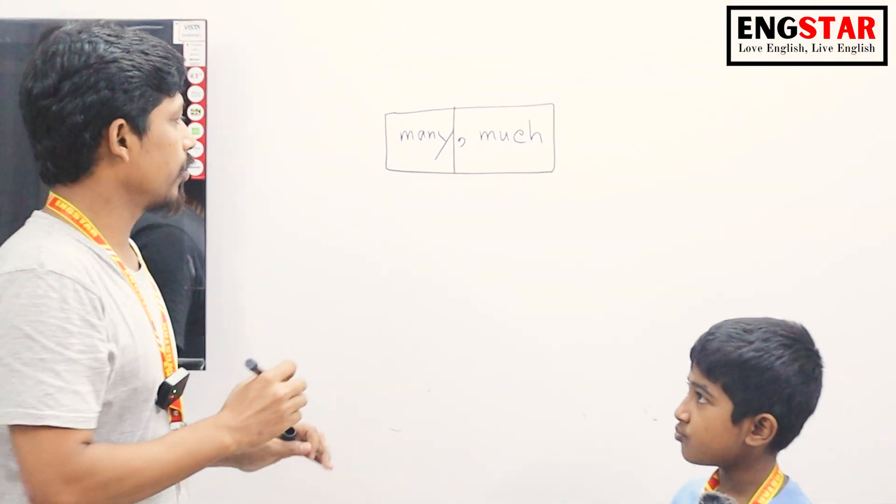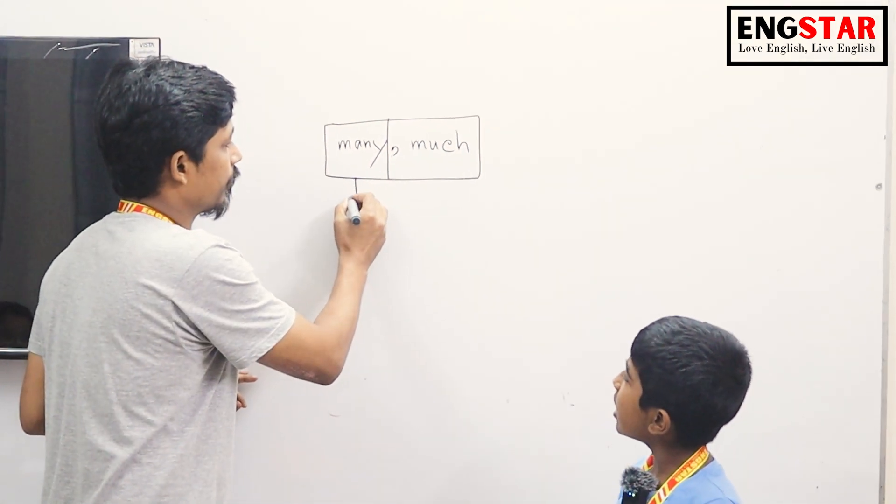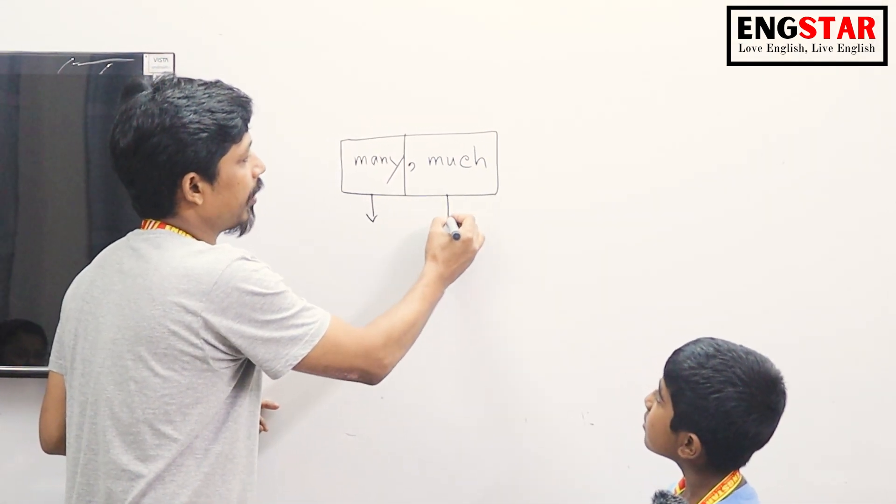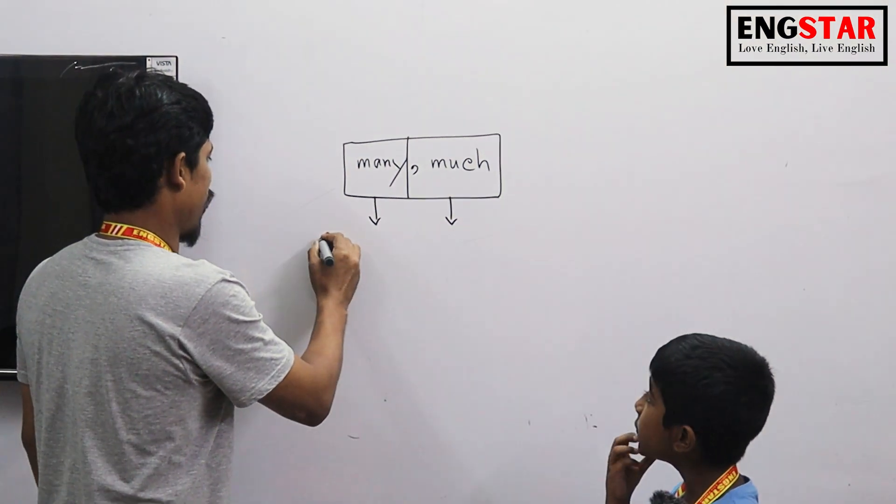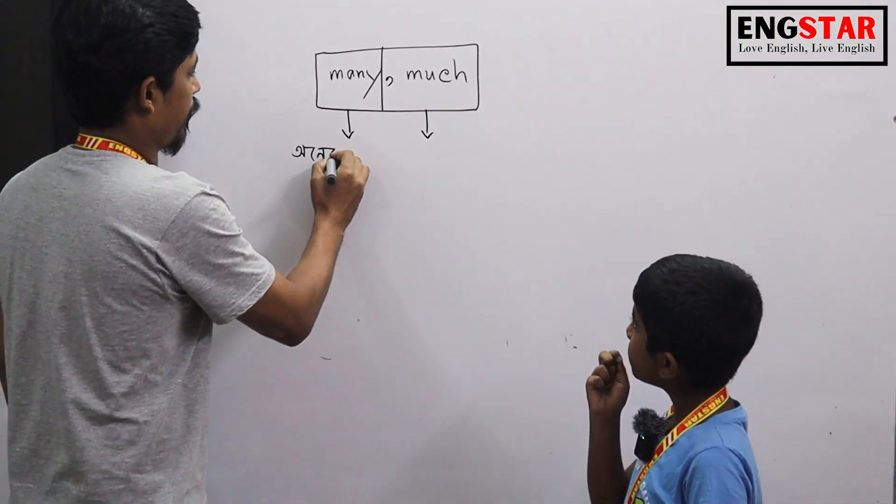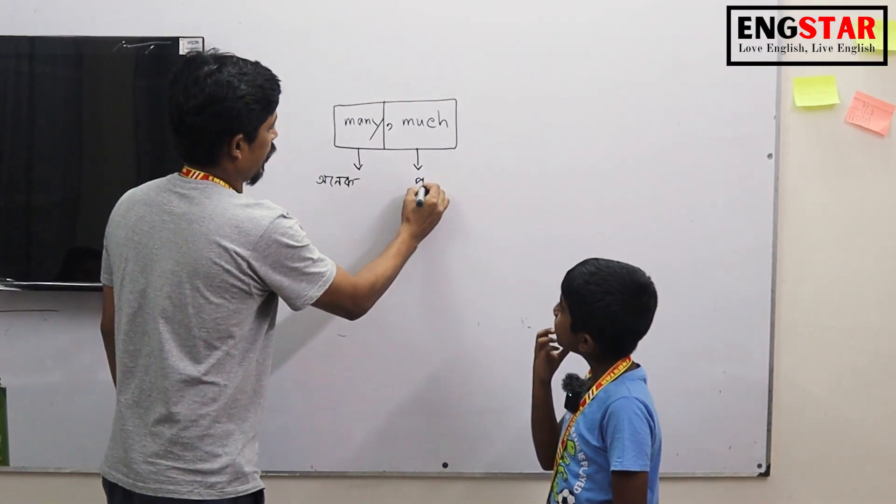Neil, do you know what is the meaning of many? Many? Onik. Much? Prochure. Prochure, okay. Onik. Prochure. Okay.